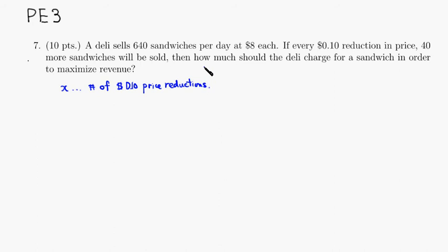Then we have to come up with the revenue function. So revenue function R of X is equal to, we have to set the price. So we need to have a price here. This is price, and then multiply by number of sandwiches sold. The price is going to be, since we do X 10 cent reductions, base price is $8, then we subtract 0.1X.